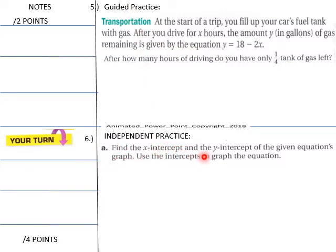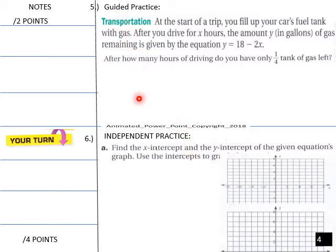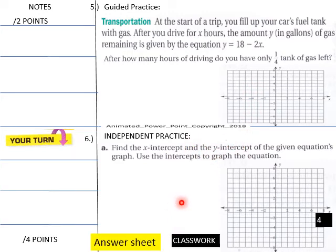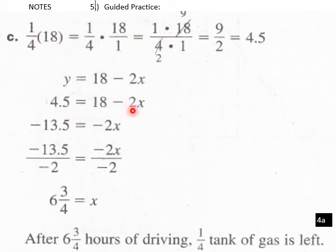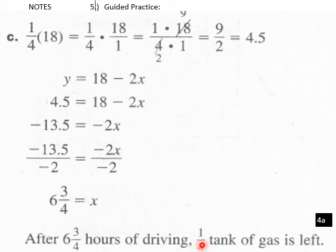Students, down here find the x-intercept and y-intercept of the given equations and use the intercepts to graph the equation. For the guided practice, one quarter of 18 equals one fourth times 18, which equals 4.5. So y equals 4.5, giving us 4.5 equals 18 minus 2x. Solving for x, we get x equals six and three quarters. After six and three quarters hours of driving, one quarter of a tank of gas is left.